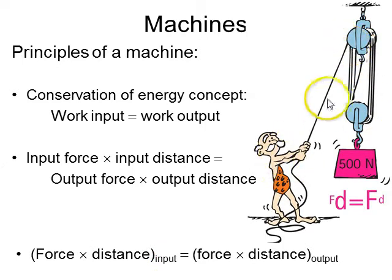This weak man is pulling with some small force. He's pulling a whole lot of string some large distance. Meanwhile, this 500 newtons, very heavy mass, is going up some small distance, but it takes a very large force to raise it that small distance. And so, these are equal.